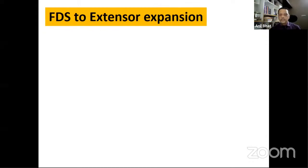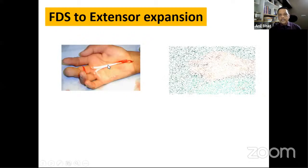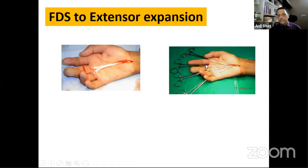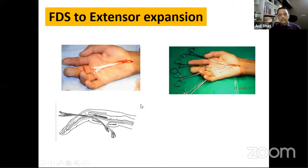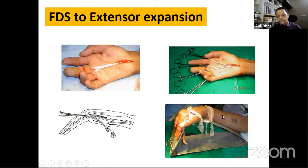Technically, the FDS from the middle finger is harvested and brought out of the carpal tunnel. It already has two slips, each split into two, creating four slips. Each slip passes deep to the transverse metacarpal ligament through the lumbrical canal and inserts into the lateral extensor expansion. Correct tension is maintained using a specialized tensioning device. The cascade of finger flexion must be restored when tensioning.